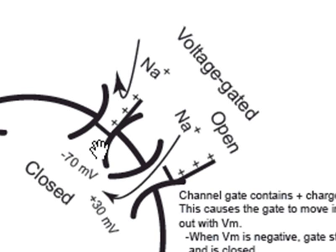These positive charges are going to respond to the voltage of the membrane inside the cell. If the inside of the cell is like minus 70 millivolts, those positive charges are going to be attracted to the negativity inside the cell, and so this gate is going to stay slid down.